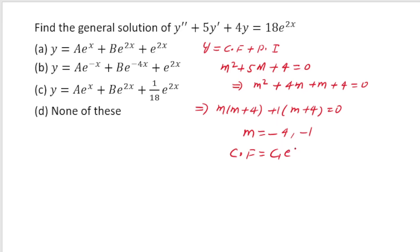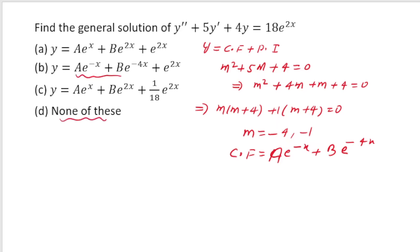The complementary function will be c₁e^(-x) + c₂e^(-4x). They have used constants a and b, so I could also write it as ae^(-x) + be^(-4x). Looking at the options, this is clearly matching, but since there is a 'none of these' option also, I need to find the PI as well.